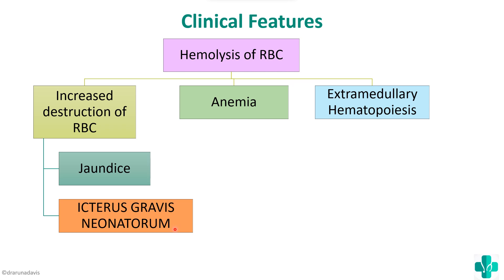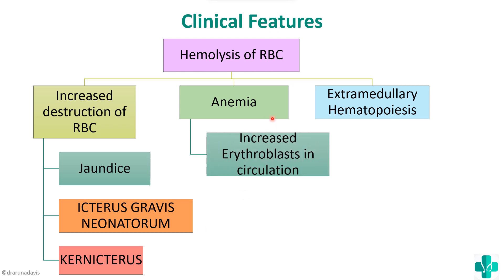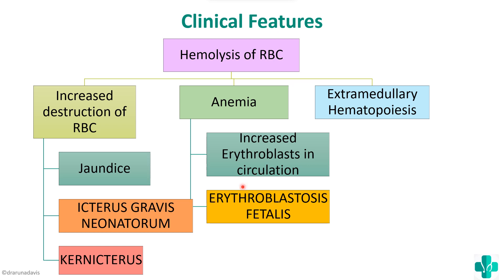If the condition is severe, bilirubin can enter the brain, causing what is known as kernicterus. So two complications from increased RBC destruction are icterus gravis neonatorum and kernicterus. Due to anemia, there will be increased erythroblasts in circulation — the body compensates by increasing RBC production. This condition of increased erythroblasts in circulation is known as erythroblastosis fetalis, another manifestation of hemolytic disease of the newborn.